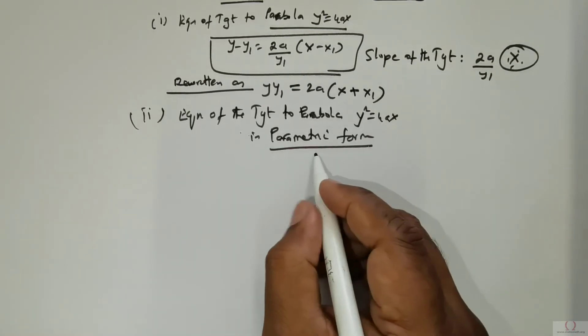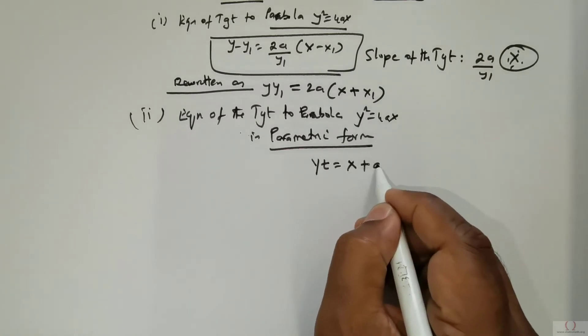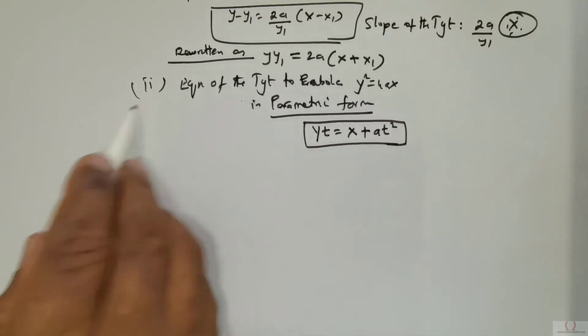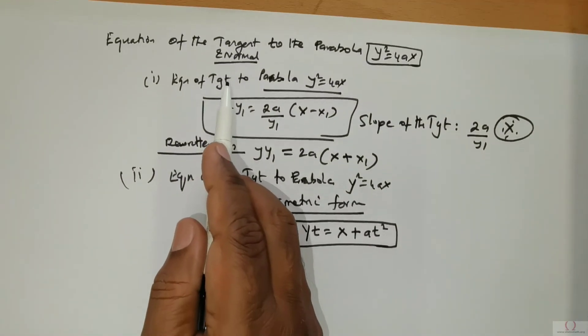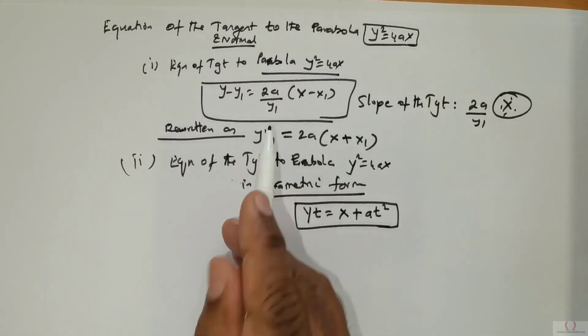That is given to be as y·yt = x + at². This is very important. The earlier form was the Cartesian form in x and y; this is the equation of the tangent to the parabola in parametric form.